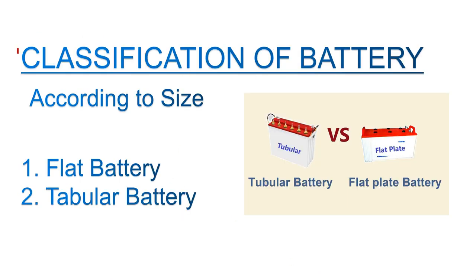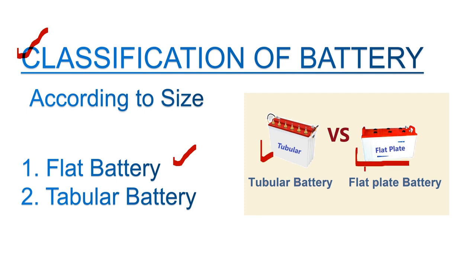Now, classification of batteries. According to size, we have two types: flat plate battery and tubular battery. The tubular battery is taller in height, while the flat plate battery has more width but less height. This physical difference helps you recognize which type you are looking at in the market.